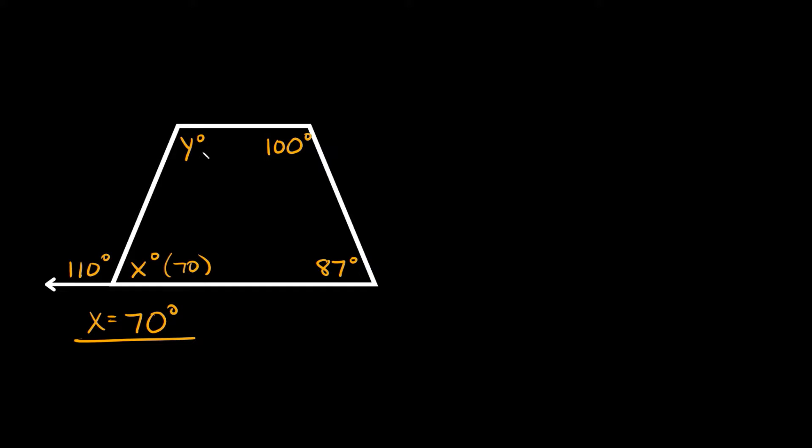Now how can we find y? Well for that we're going to have to use an angle sum formula. So we're going to say that the sum of all the interior angles is equal to n minus 2 times 180. So when you add up all the interior angles inside any polygon it's going to be equal to n minus 2 times 180 where n is equal to the number of sides.